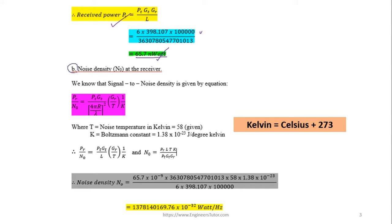The next part is to find the noise density at the receiver. The equation for signal-to-noise ratio at the receiver involves the received signal power and the noise temperature T in degrees Kelvin. The noise temperature of the receiver is given as 58 Kelvin. We can convert between Kelvin and Celsius using: Kelvin = Celsius + 273, but this conversion is not needed here since temperature is already in Kelvin.